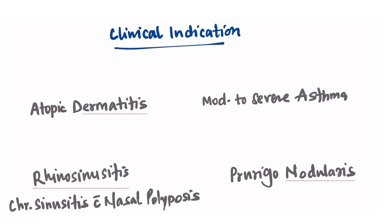This drug can be used in atopic dermatitis, moderate to severe bronchial asthma, rhinosinusitis, especially chronic sinusitis with nasal polyposis, and prurigo nodularis.